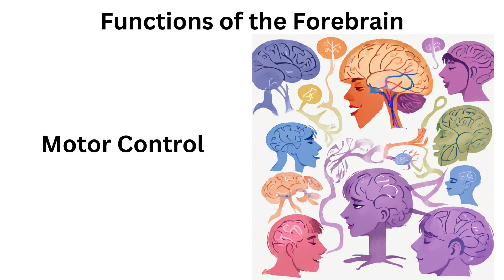The basal ganglia is involved in motor control and coordination. It helps initiate and regulate voluntary movements.